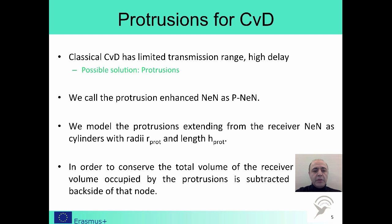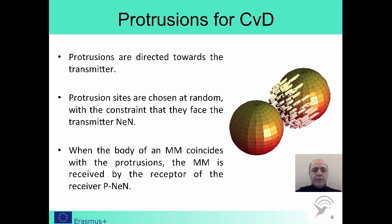In the analysis, we will model protrusions as cylinders for the sake of simplicity. For a fair comparison, we will keep the volumes of the PNAN and the regular NAN equal by subtracting the volume of the protrusions from the backside of the PNAN. The protrusions stick out from random locations on the surface of the receiver faced towards the transmitter. We assume a messenger molecule is received when it touches a protrusion.